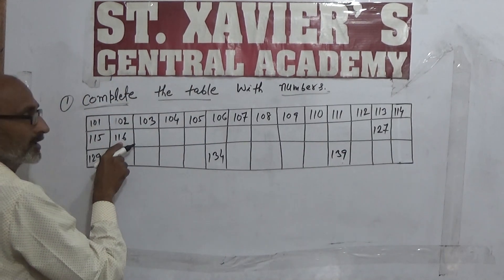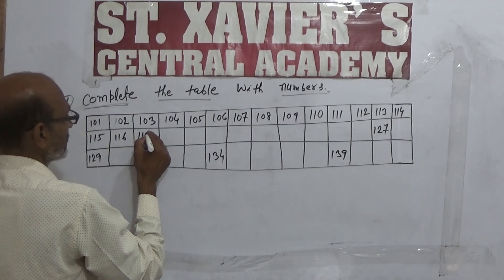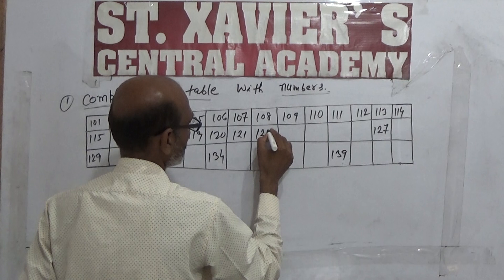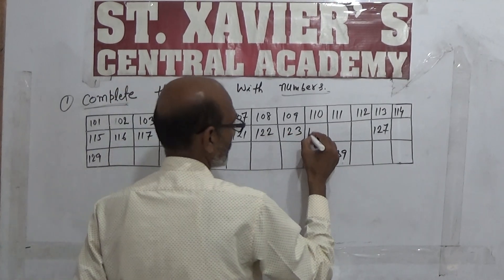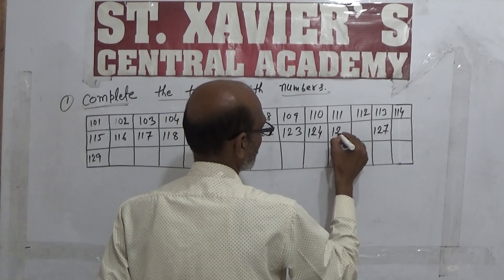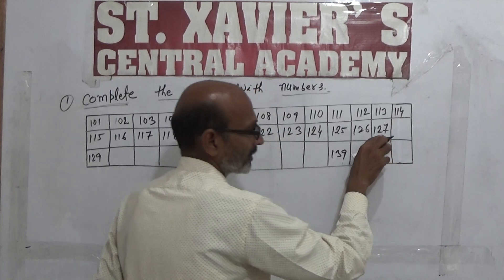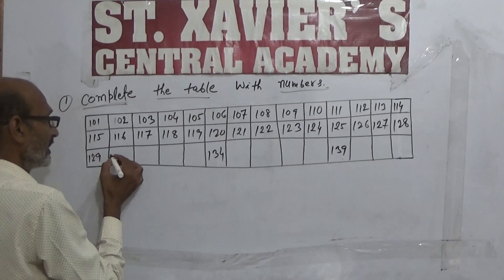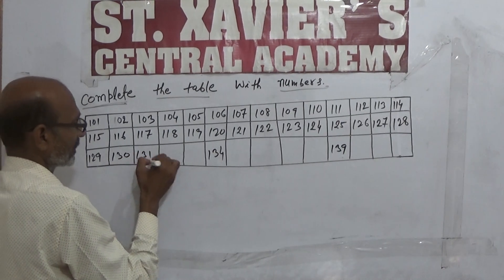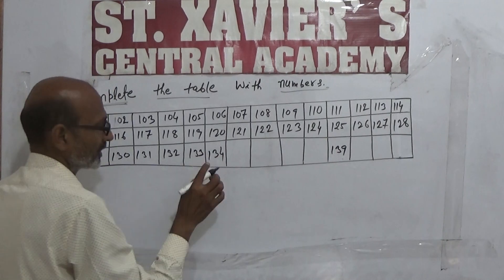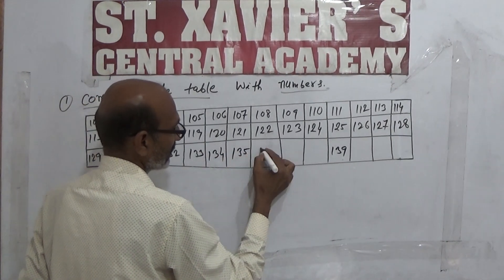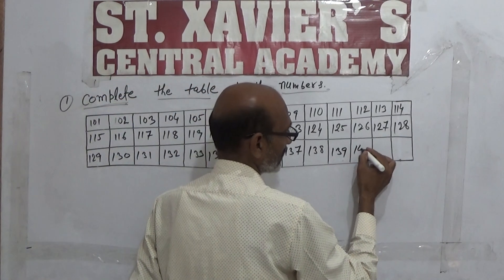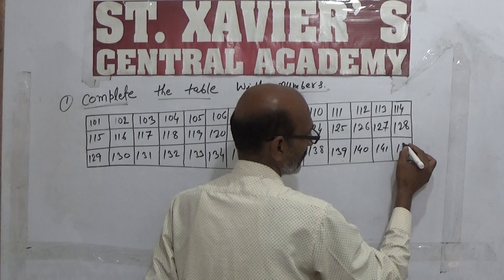यान दिया है 140, योगा 150 — 117, 118, 119, 120, 121, 122, 123, 124, 125, 126, 127, 128, 129, 130, 131, 132, 133, 134, 135, 136, 137, 138, 139, 140, 141, 142।